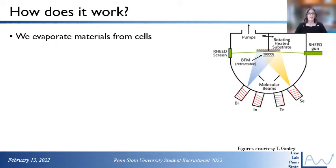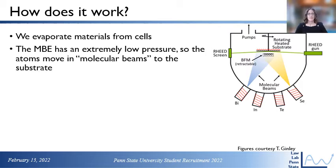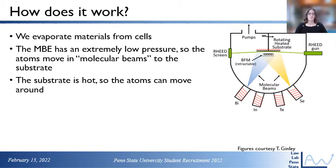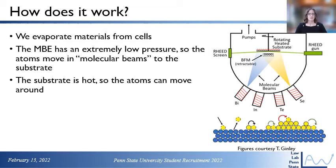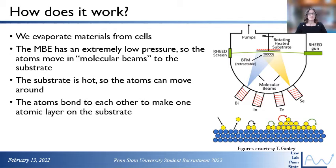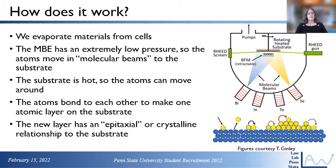So how does MBE work? The schematic of the chamber is shown on the right. Basically what we do is we evaporate materials from cells — we heat these materials up and they evaporate. The MBE system has an extremely low pressure so the atoms move in molecular beams to the substrate. The substrate is hot so the atoms can move around and find a low free energy position. The atoms bond to each other to make one atomic layer on the substrate, and this new layer has an epitaxial or crystalline relationship to the substrate.